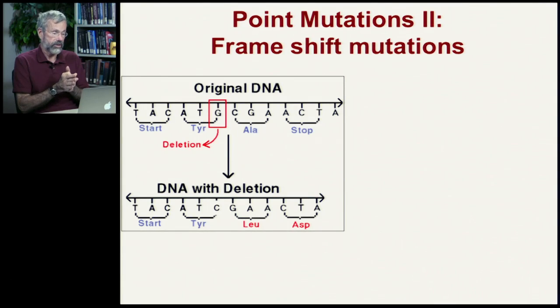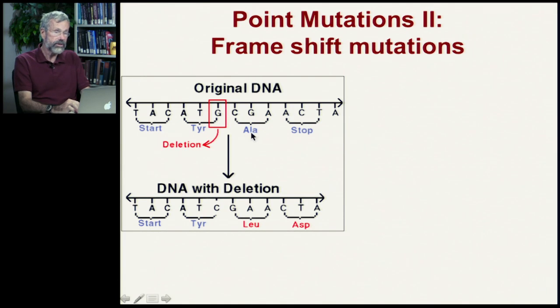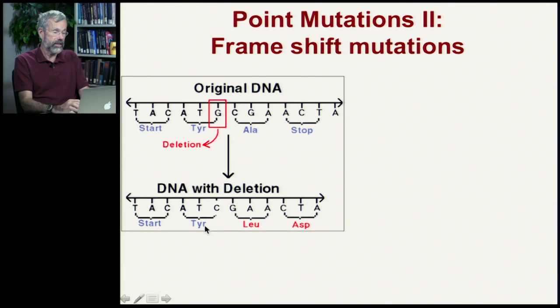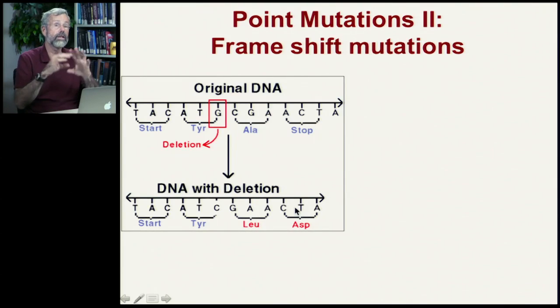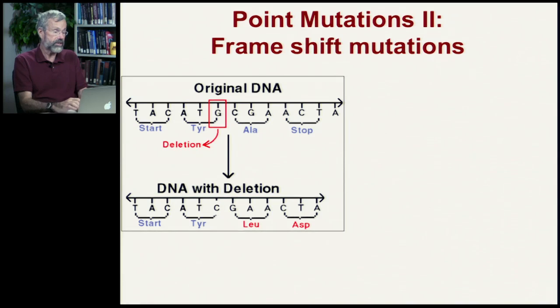There's another kind of point mutation that alters the length of the DNA molecule, producing what are called frameshift mutations. The first of these is a deletion mutation, where just one base pair is missing from the chromosome, so everything downstream is off by one. Instead of ATG coding for tyrosine, it now picks up a C from the next codon — ATC still codes for tyrosine, but now GAA is shifted into being the new codon, giving leucine instead of alanine. Everything after that continues shifted, producing a weird new protein as the codons read blindly in triplets.